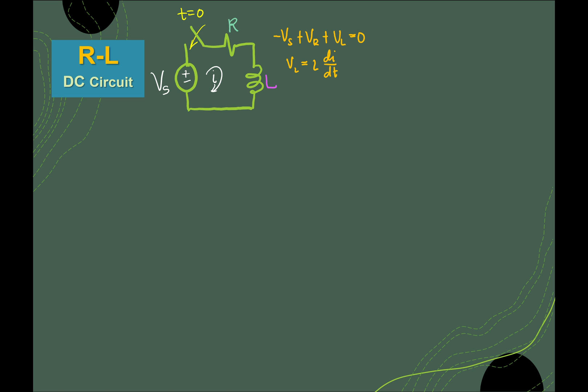What is L? L is the inductance. It is a phenomenon wherein the current that passes through the inductor produces a magnetic field. Because of that changing current — this is di/dt, meaning the rate of current —